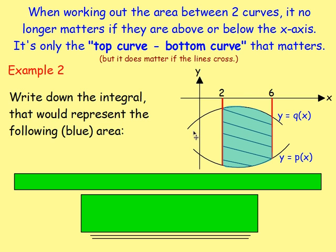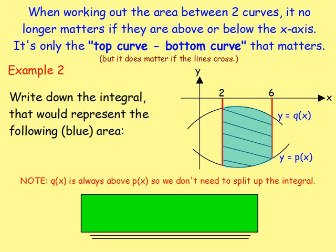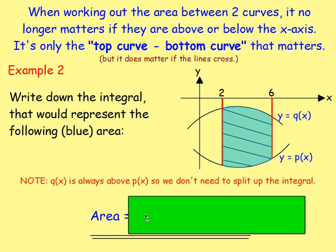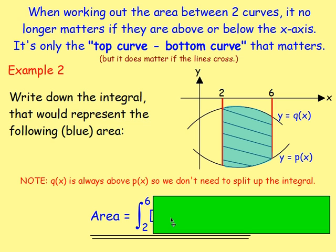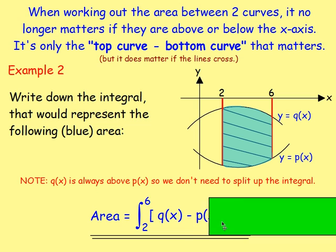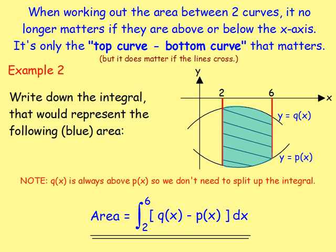Example 2: write down the integral that would represent the following blue area. Do the curves cross? No — q of x is always above p of x. The limits would be 2 and 6, so the upper limit is 6 and the lower limit is 2. You'd have q of x minus p of x, integrating with respect to x. That is how you would find that one.